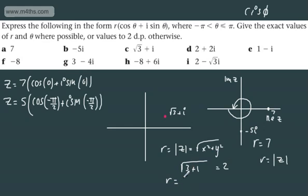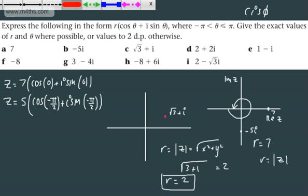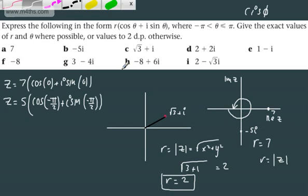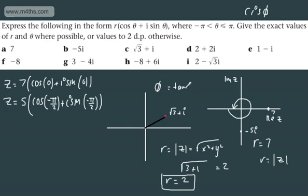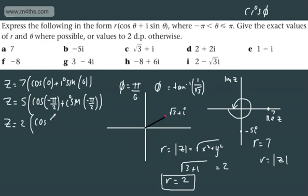So we can say that R is going to be equal to 2 — that is the modulus. If we consider the argument now, drawing a line out from the origin, the principal argument is given as the inverse tangent of y over x. So theta is given equal to the inverse tangent of 1 over root 3. This is an exact value — we should spot this to be pi by 6. So theta is pi by 6, and Z will be equal to 2 cosine of pi by 6 plus i sine of pi by 6.